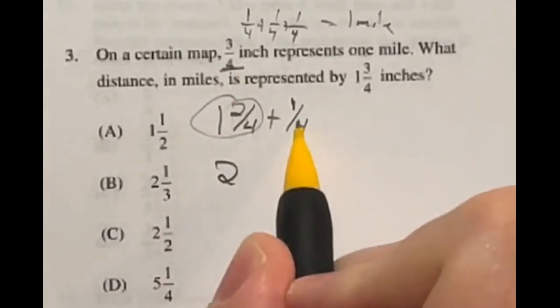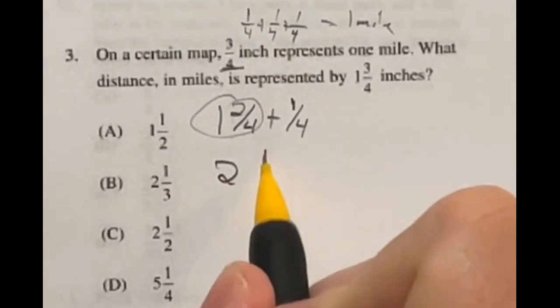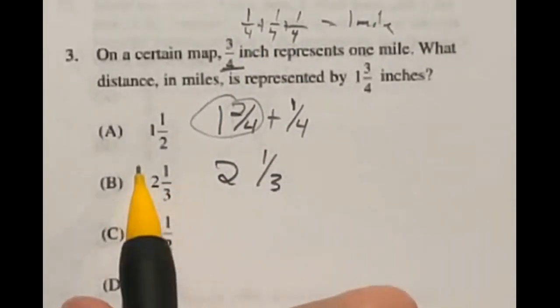Well, here's the deal. This right here is just two of these, so that's two miles. And this is only one of these one-thirds, so that's one-third of a mile, meaning our final answer here is B.